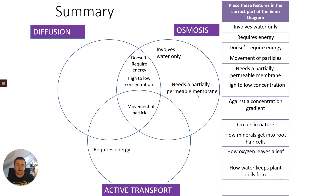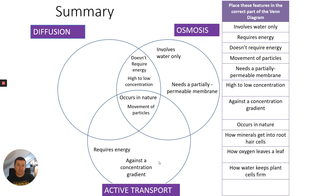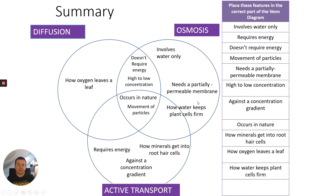'High to low concentration' — that would be both diffusion and osmosis. Particles move from a high to a lower concentration, or in terms of osmosis, from a dilute to a more concentrated solution. 'Against a concentration gradient' — that would be active transport. 'Occurs in nature' — all three would occur in nature. 'How minerals get into root hair cells' — that is active transport. 'How oxygen leaves a leaf' — that would be through diffusion. 'How water keeps plant cells firm' — that would be osmosis.